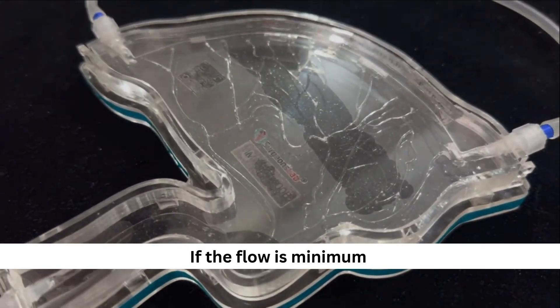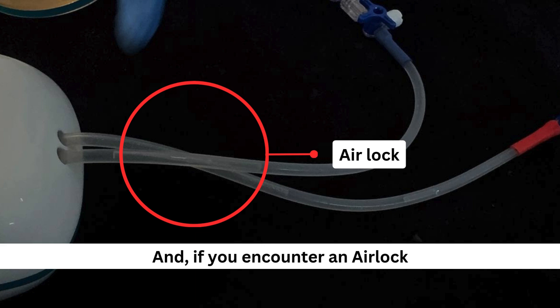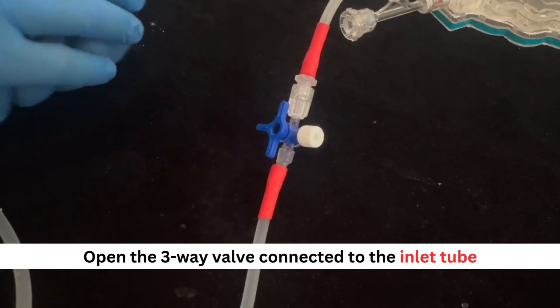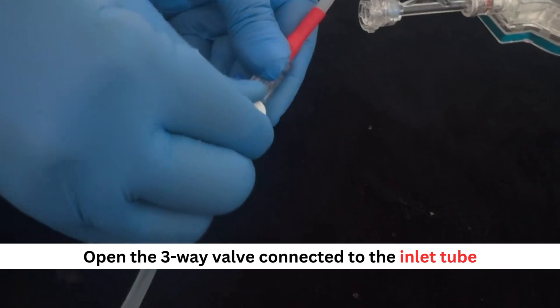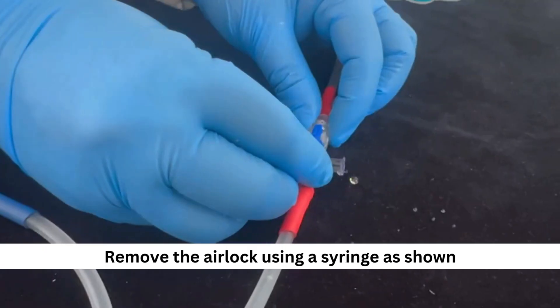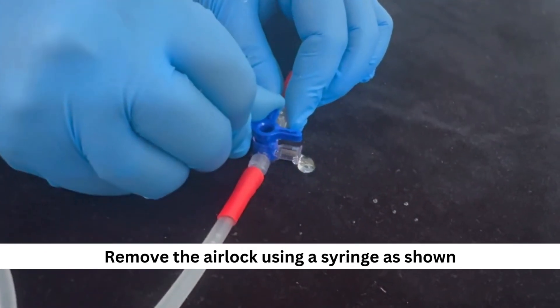If the flow is minimum, and if you encounter an airlock, open the three-way valve connected to the inlet tube. Remove the airlock using a syringe as shown.